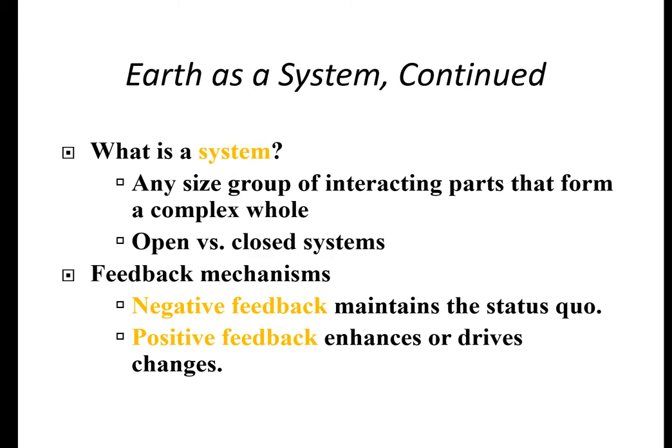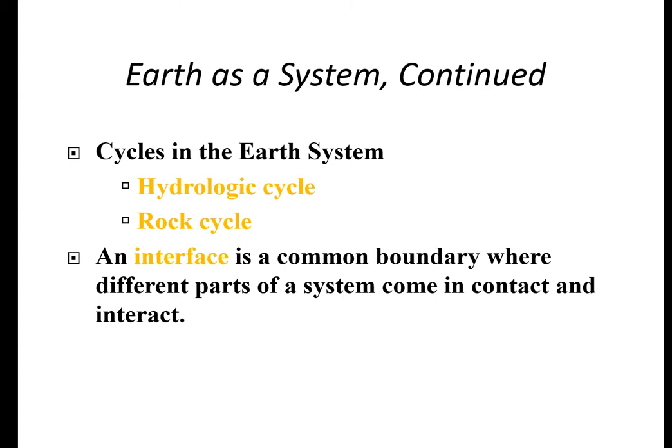A system is any size group of interacting parts that form a complex whole. These can be open or closed systems, and we can look at feedback mechanisms. Negative feedback means everything stays the same — nothing changes. Positive feedback enhances or drives changes. We also have cycles in the Earth system: the hydrological cycle, which is the water cycle, and the rock cycle — how rocks go from being magma to igneous, sedimentary, or metamorphic rocks.